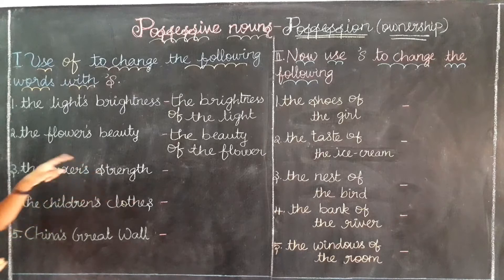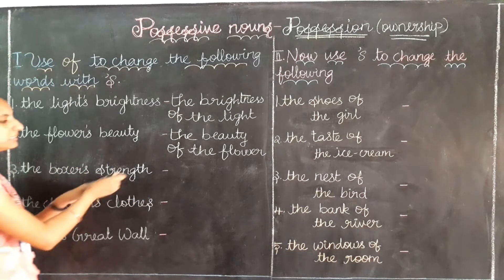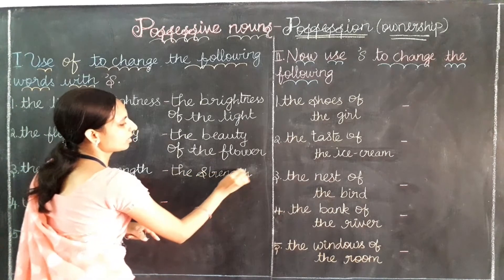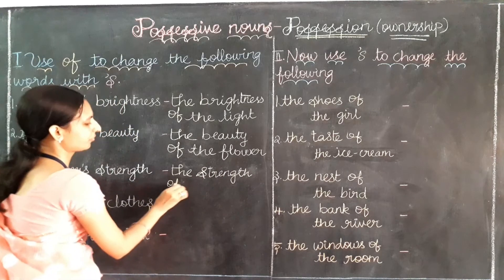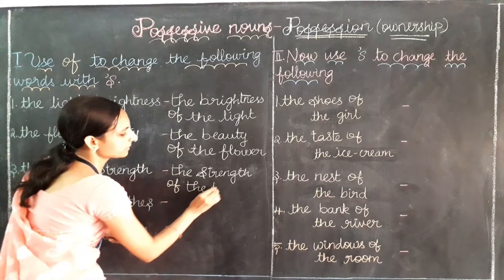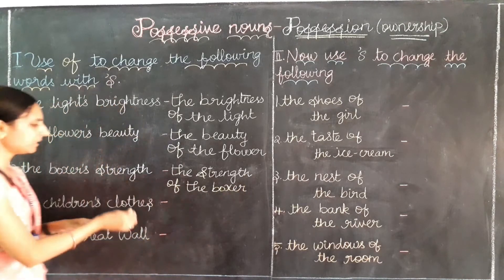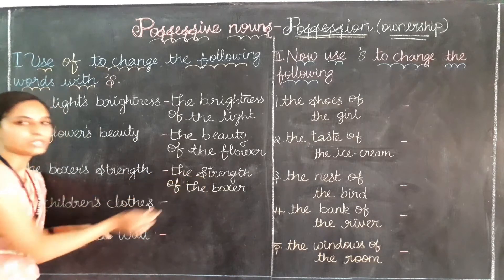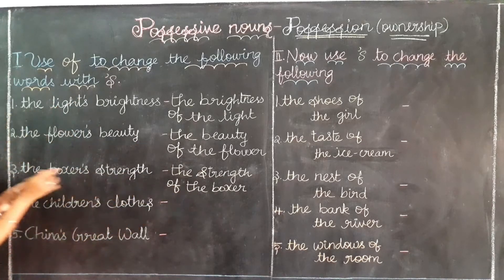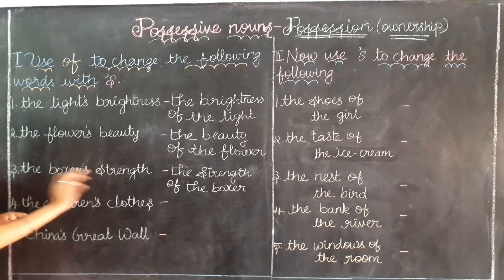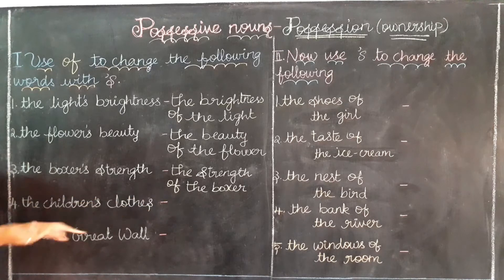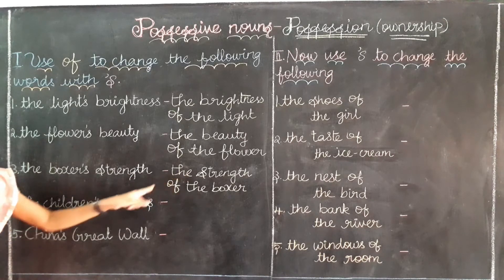Next: 'the boxer's strength.' The strength will come first: 'the strength,' then 'of,' then 'the boxer.' Remember — write the last word first by adding 'the,' then 'of,' then whatever was the first word, removing the apostrophe-S. So the answer is 'the strength of the boxer.'